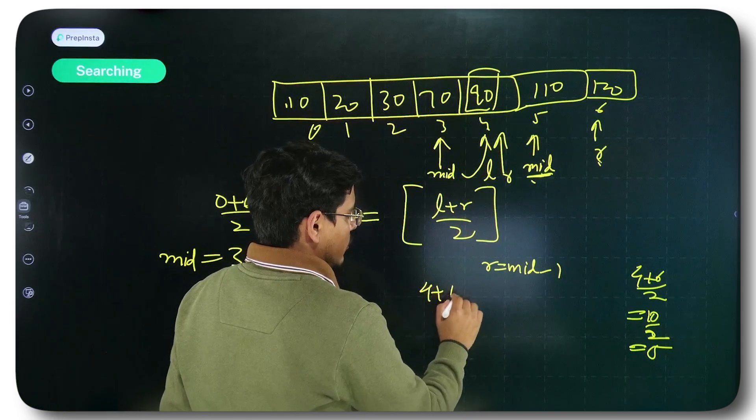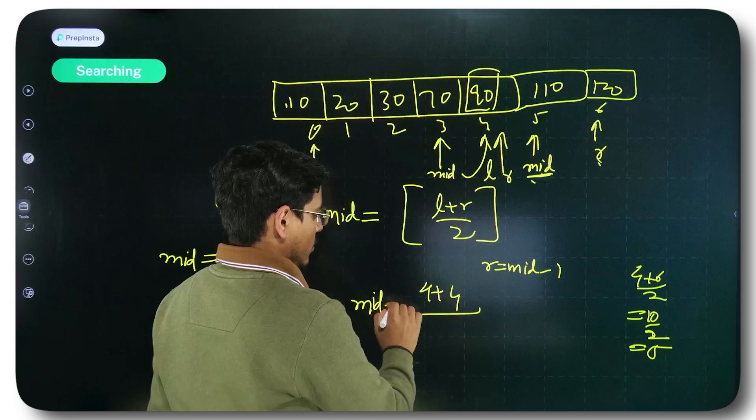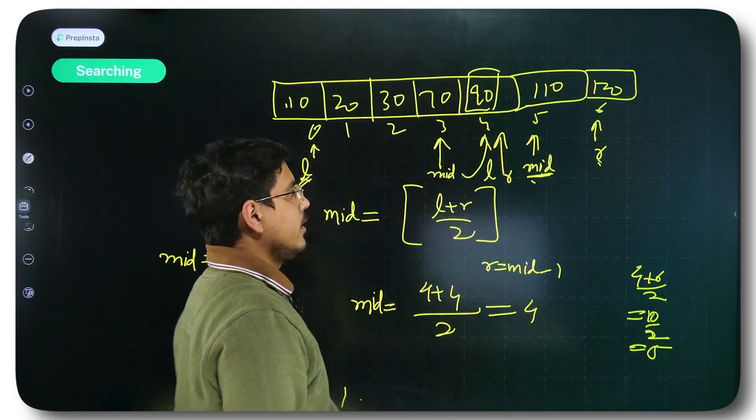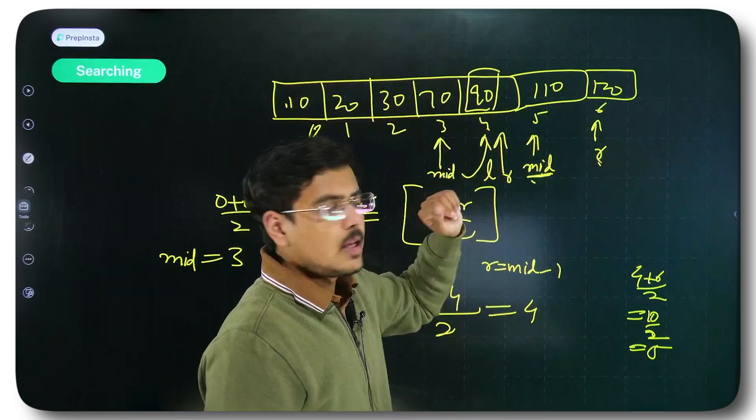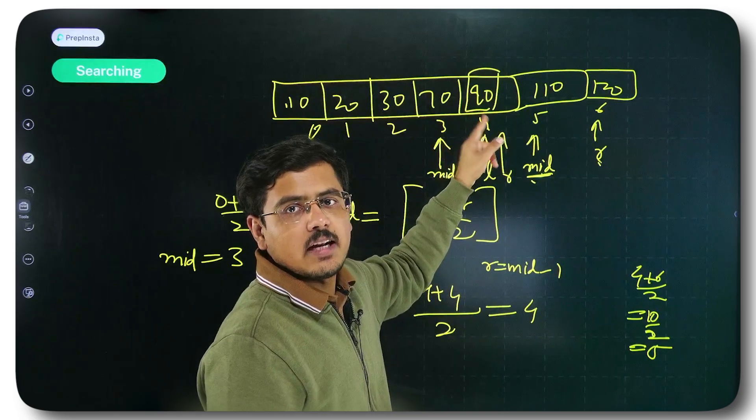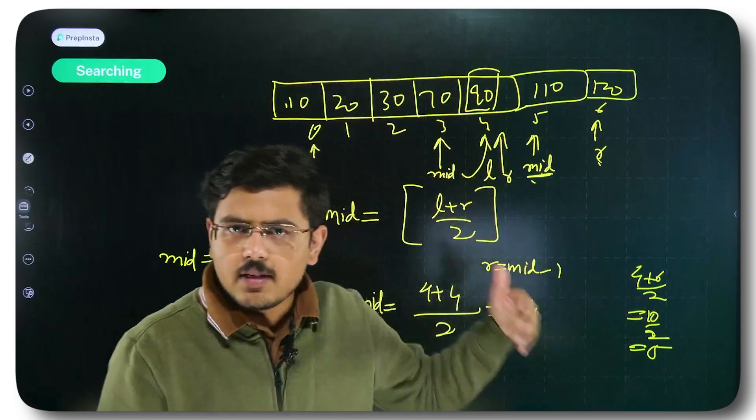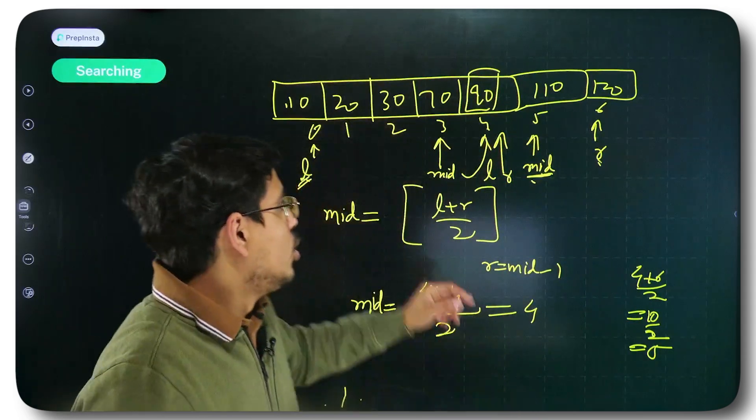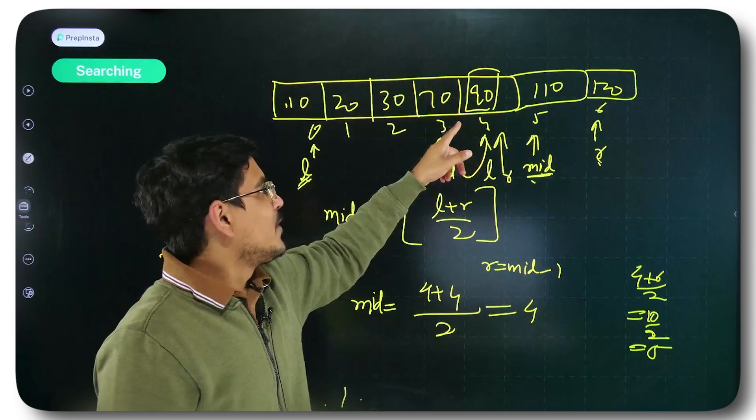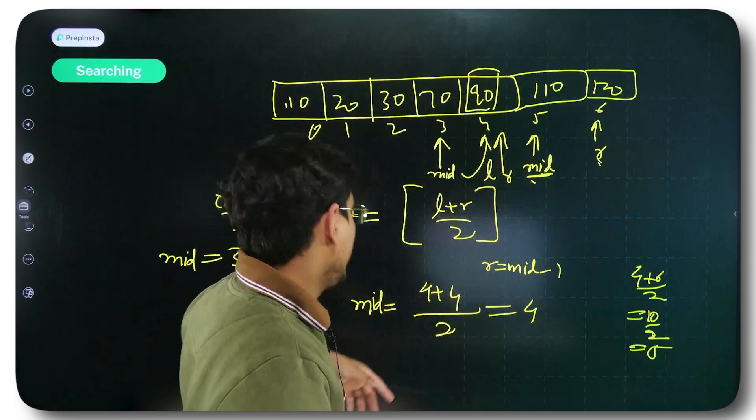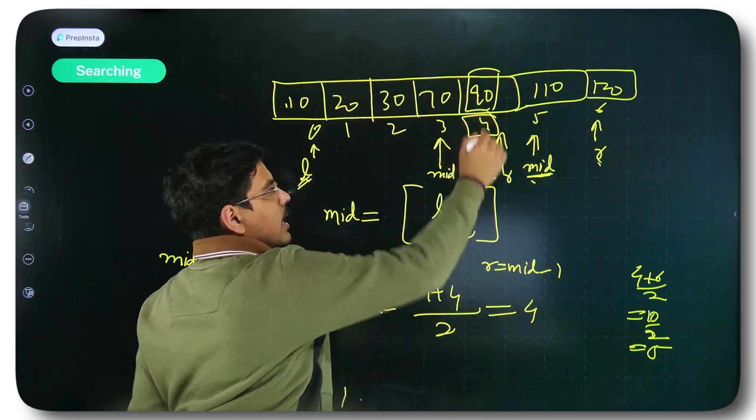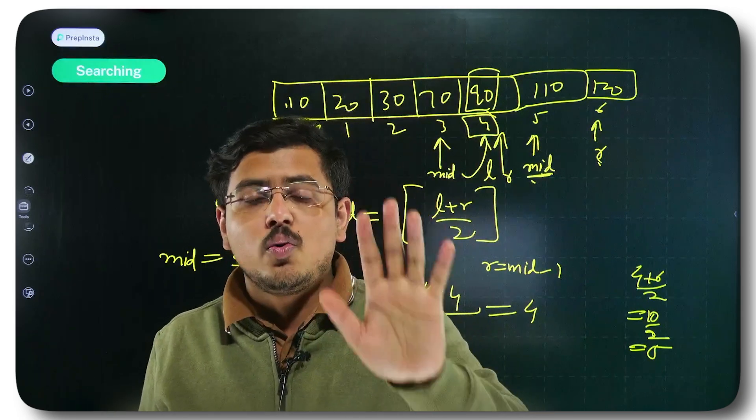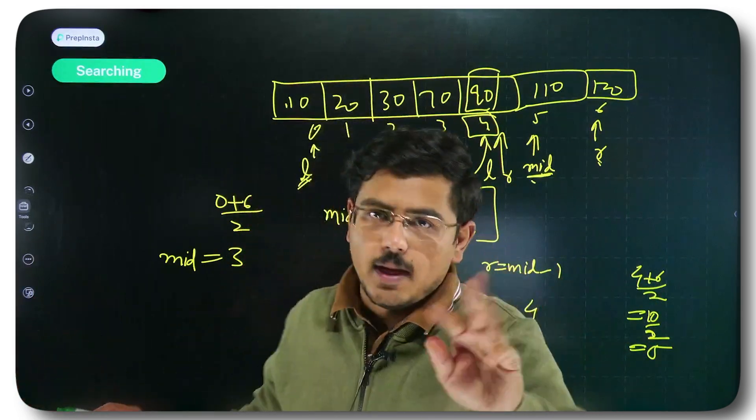Now you check whether at mid the value is present or not, whether it is greater or whether it is smaller. It is neither of them. It is neither greater nor smaller because it is equal to the value that you are trying to find. So you have found the value. You have finally found the value that you were looking for. You return this index and you say that at the index 4, we have our desired value. This is what we are going to do in the program. The same thing we are going to do in the program. I will show you.